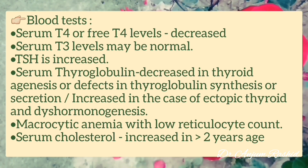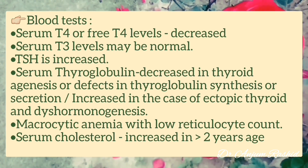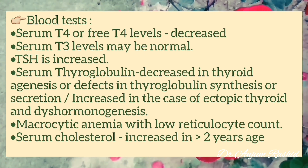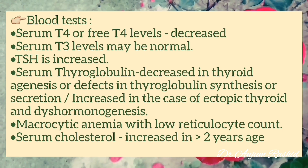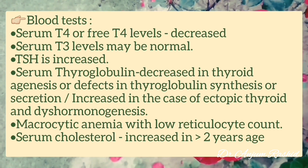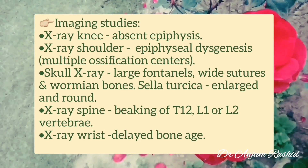TSH is increased. Serum thyroglobulin is decreased in thyroid agenesis or defects in thyroglobulin synthesis or secretion, and serum thyroglobulin is increased in cases of ectopic thyroid gland and dyshormonogenesis. There may be macrocytic anemia with low reticulocyte count, and serum cholesterol is increased in children more than two years of age.